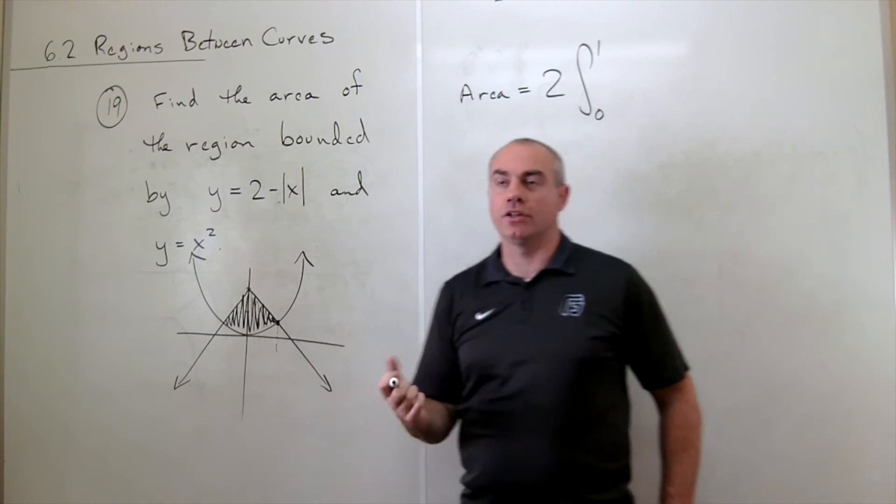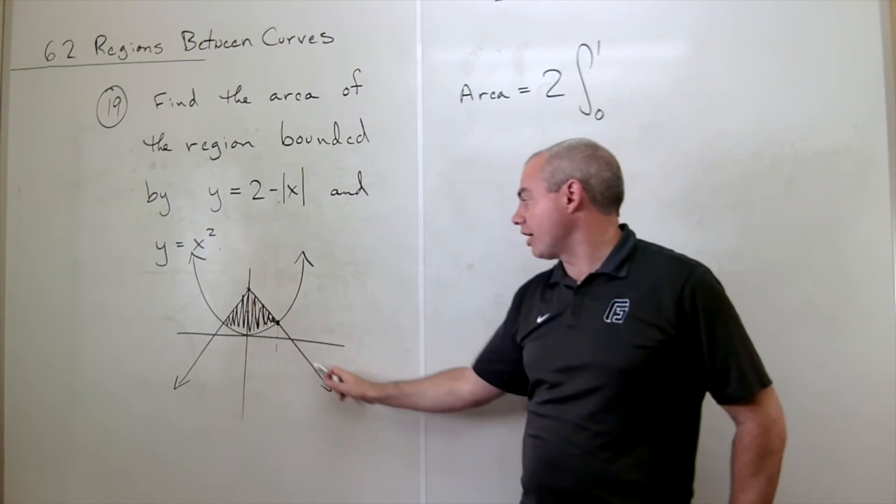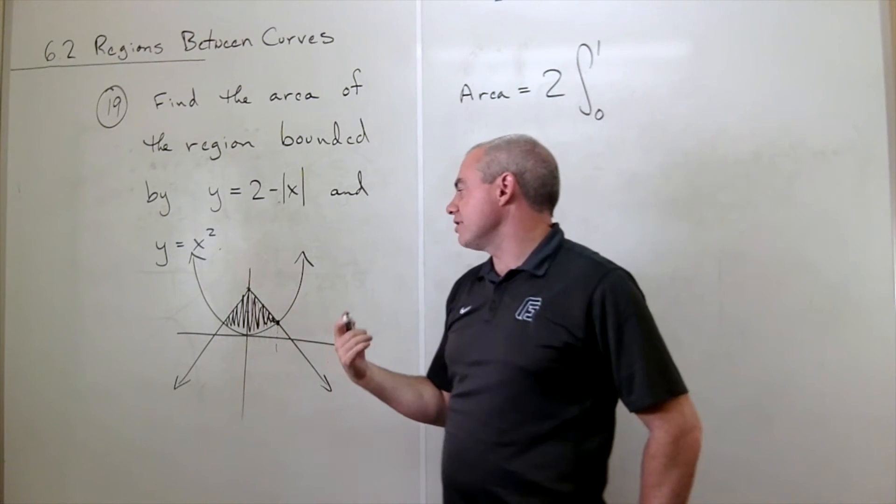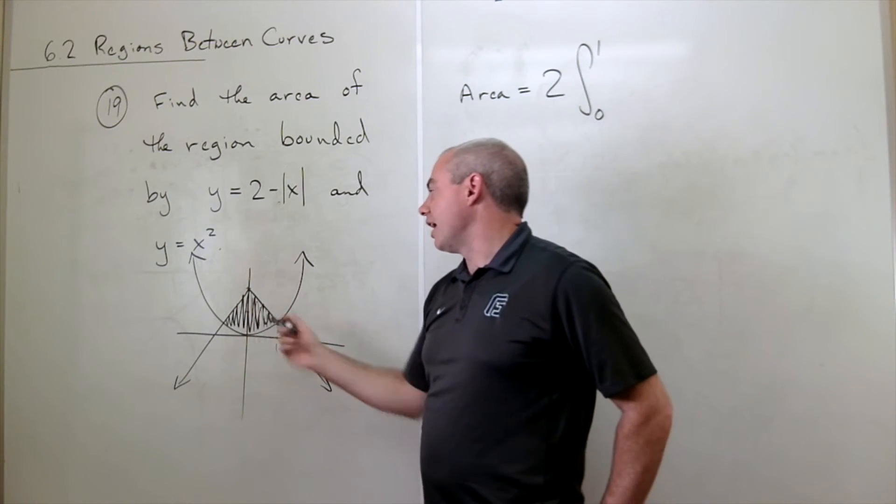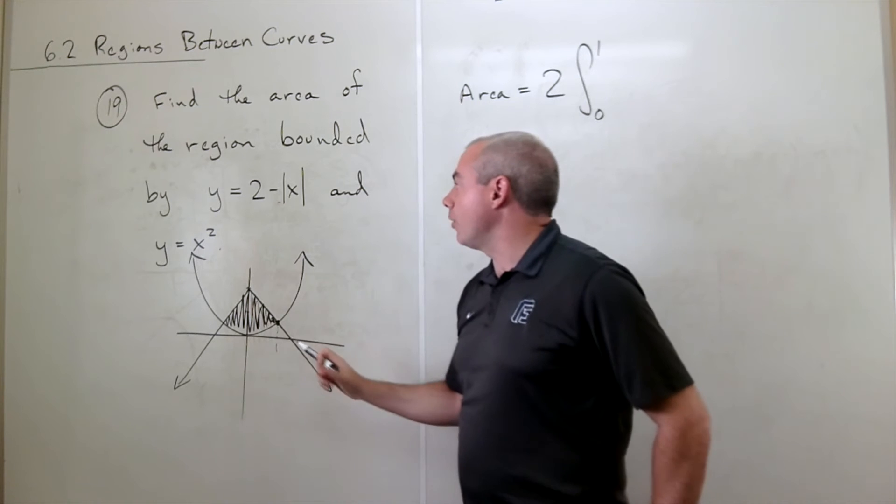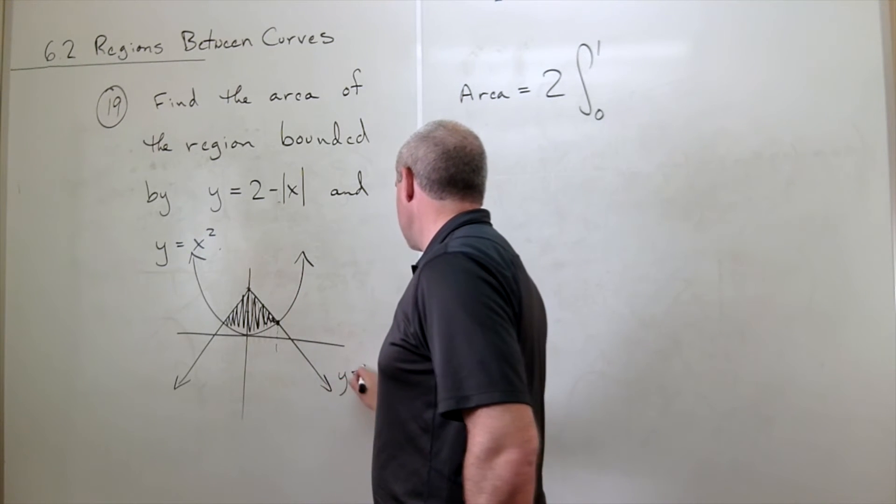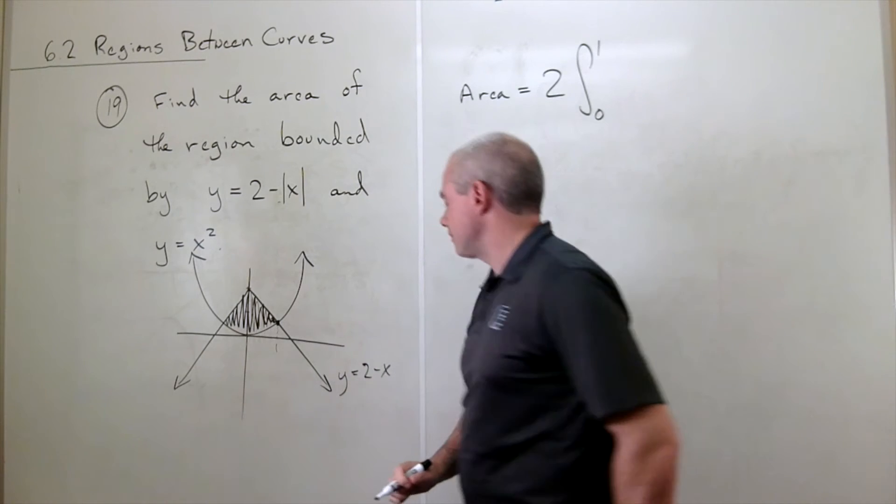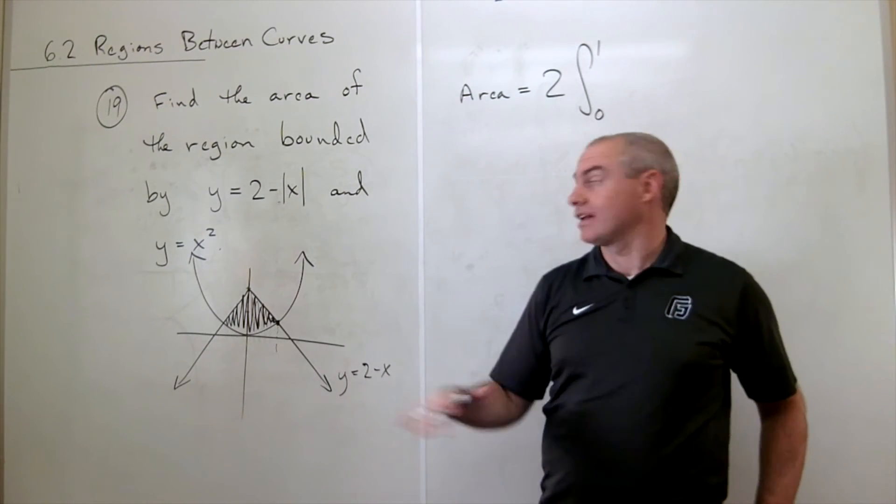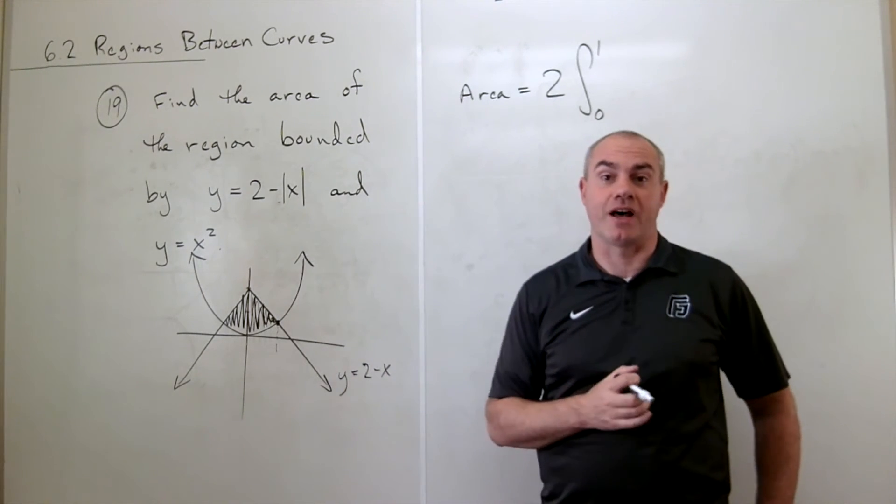And you can see using the intercept and the slope that this is actually just the line y equals 2 minus x. So let's use that and just cut out that absolute value sign altogether.